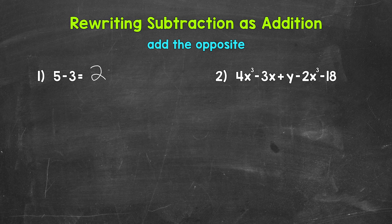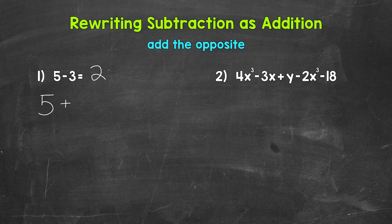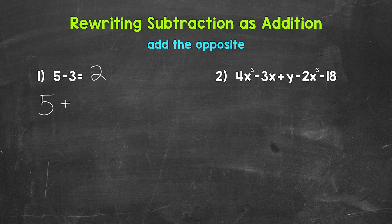We can rewrite this as addition by adding the opposite. Always remember, we can add the opposite. So let's rewrite this as 5 plus, so we are adding the opposite. The opposite of positive 3 is negative 3. Let's change this to adding a negative 3.